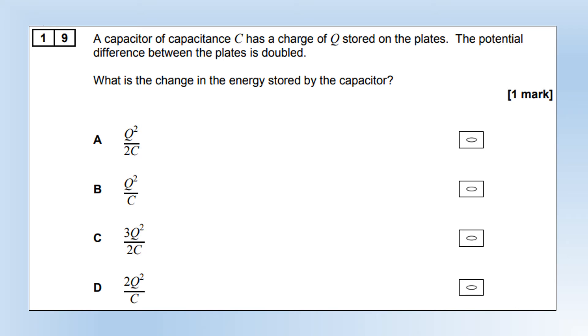A capacitor of capacitance C and a charge of Q stored on the plates. The potential difference between the plates is doubled. What is the change in the energy as stored by the capacitor? My original expression for energy is just going to be Q1 squared divided by 2C. But when we double the potential difference, we're going to double the charge. In the second instance, the charge is going to be doubled. That means the energy is now going to be four times as big because Q gets squared. The change in energy is going to be given by 3 over 2Q squared over C, which is this one.